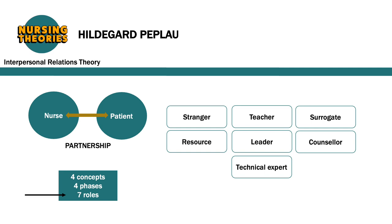Teacher is when the nurse helps the patient to learn formally or informally. Leader is when the nurse offers direction to the patient or to the group. Surrogate is when the nurse is serving as a substitute for another, such as a parent or a sibling. Counselor is when the nurse promotes experiences leading to health for the patient, such as expressing their feelings. Technical expert is when the nurse provides physical care for the patient and operates equipment as required.